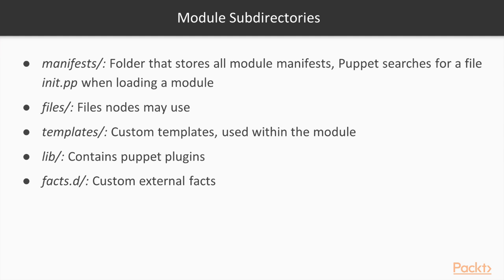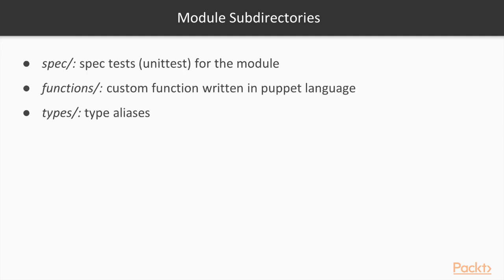There is a files directory where you can store files that nodes may download when using the module. There is a templates directory for custom templates used within the module. There is a lib directory which contains Puppet plugins, since Puppet is also extensible. There is a facts.d directory where you can store custom facts — facts are used to collect data about the system. There is a spec directory for unit tests using rspec-puppet. There is a functions directory for custom functions written in the Puppet language, and a types directory for type aliases.